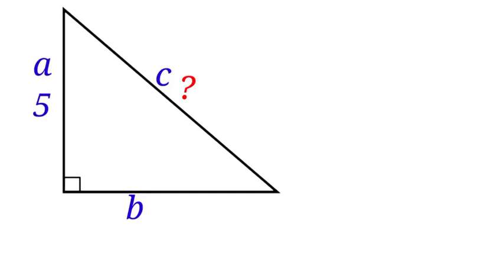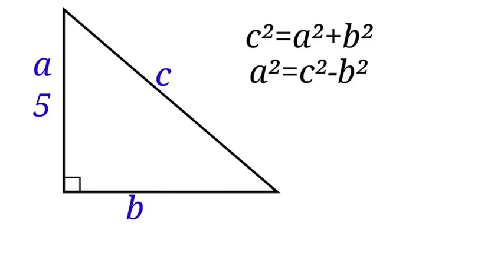Let us use Pythagorean theorem to find the length of the two unknown sides. Pythagorean theorem states that the square of the hypotenuse is equal to the sum of the square of the two other sides: c² = a² + b². So a² = c² - b².